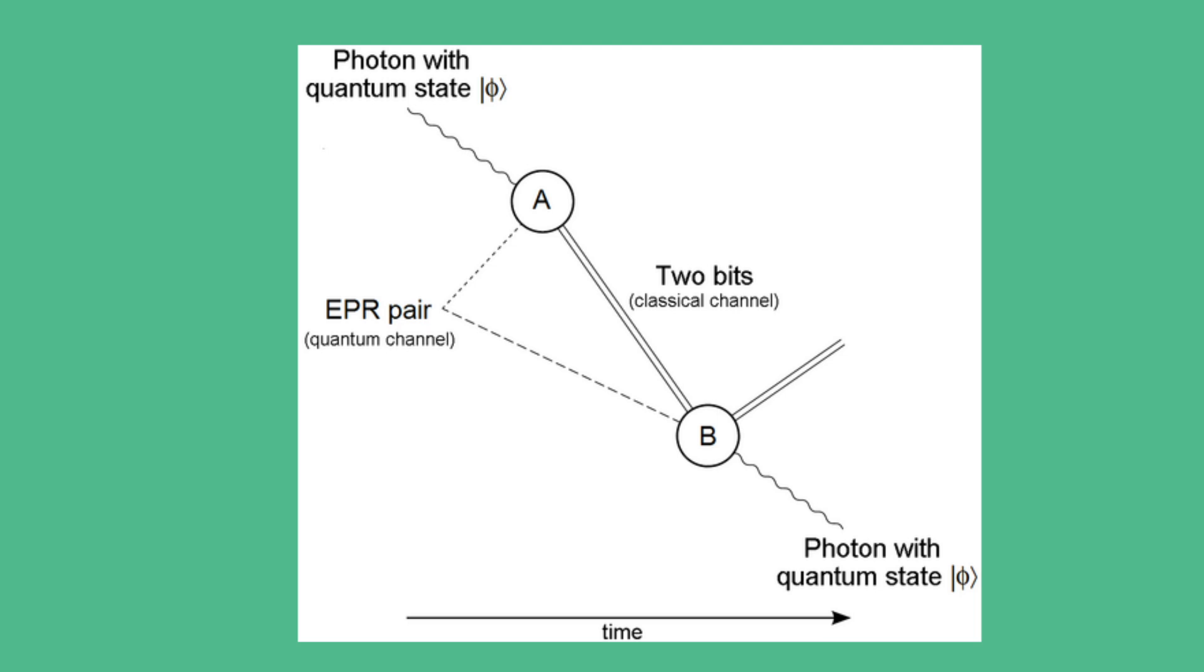But for this to work, two photons need to be indistinguishable. They must look the same, act the same, have the same color, the same timing, basically twins. And making twins from different quantum light sources has always been insanely hard. Until now.